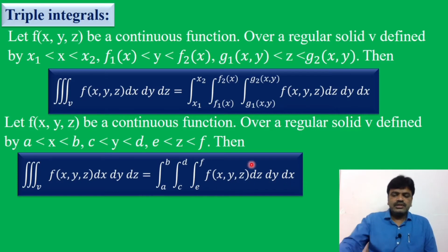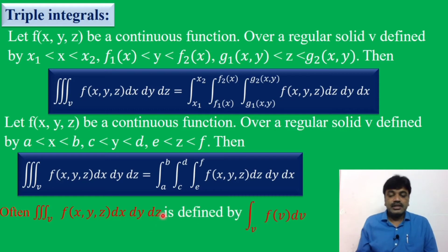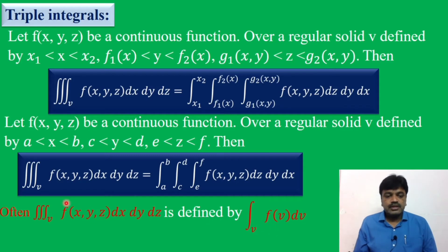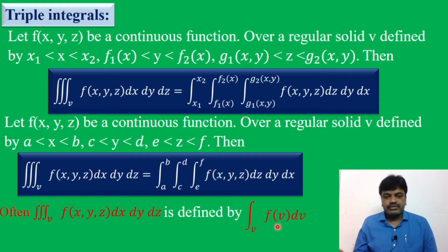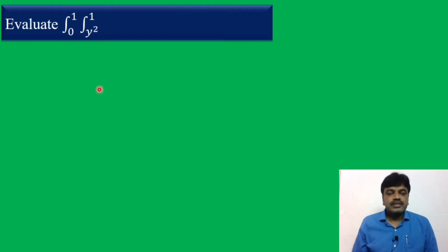Generally, triple integral over V of f of x, y, z dx dy dz is defined as a single integral over V. Triple integral over V means integral of f(V) dV, where dV means dx dy dz. Now let us see the problem.